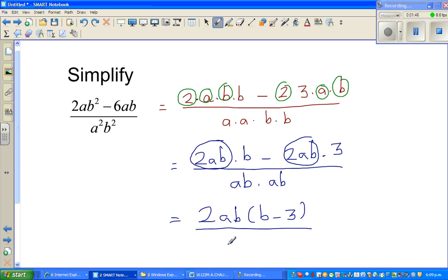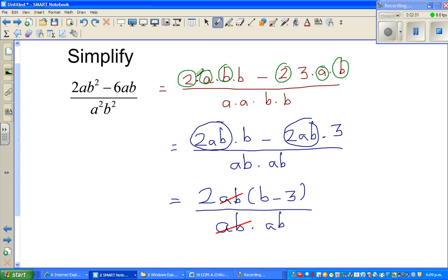And the denominator I can write as 2ab times ab. Now what can you cancel? Well, I can cancel this ab with this ab. So this is 2ab times (b minus 3) over ab, and that's your final answer. You can't simplify this any more.